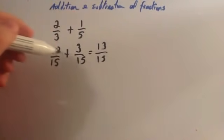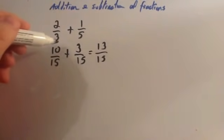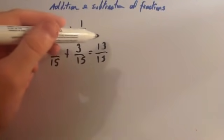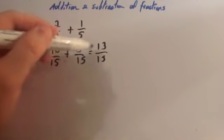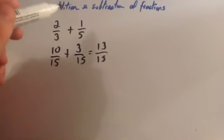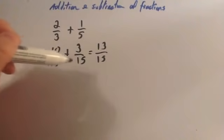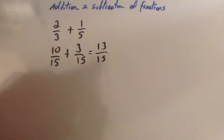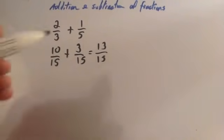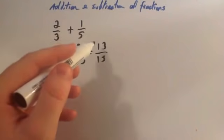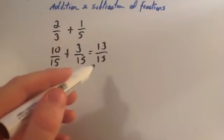Make sure you don't add the bottom number. You're just saying how many: if you've got ten-fifteenths and three-fifteenths, altogether that would be thirteen-fifteenths. When you're adding fractions, you don't add the denominators — they stay the same. So the answer is thirteen-fifteenths.